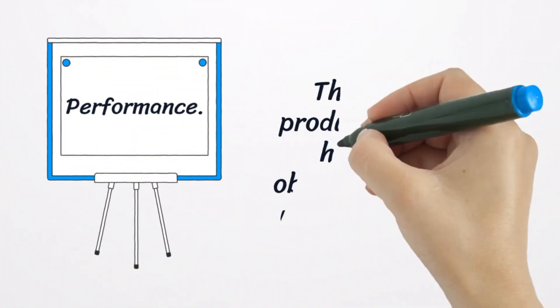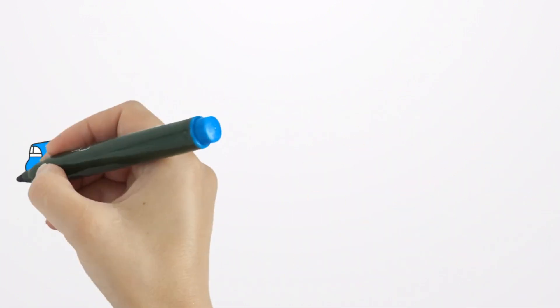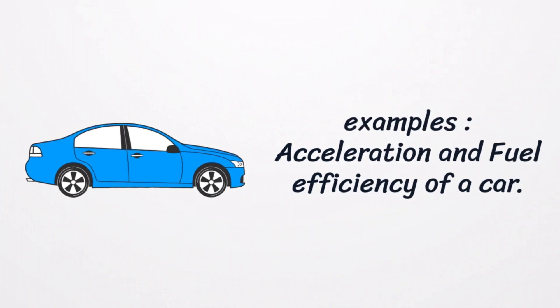First dimension is performance. This refers to a product's main use. How good is it, objectively, compared with the competition? Garvin gives the examples of a car's acceleration and fuel efficiency.